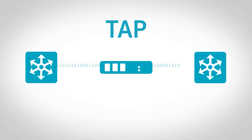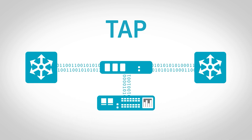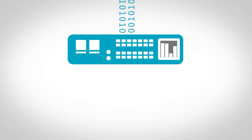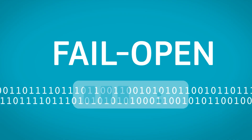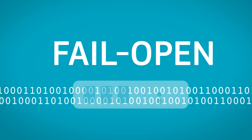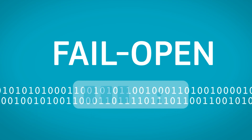Many teams are shifting away from span ports to network taps. In contrast to a span port, a tap can be deployed anywhere in your network. They copy every packet, even those with errors, and they forward them to your tools with zero latency. Taps are simple devices with a long mean time between failure, and if a tap does fail for any reason, traffic defaults to the wire, maintaining your network availability.